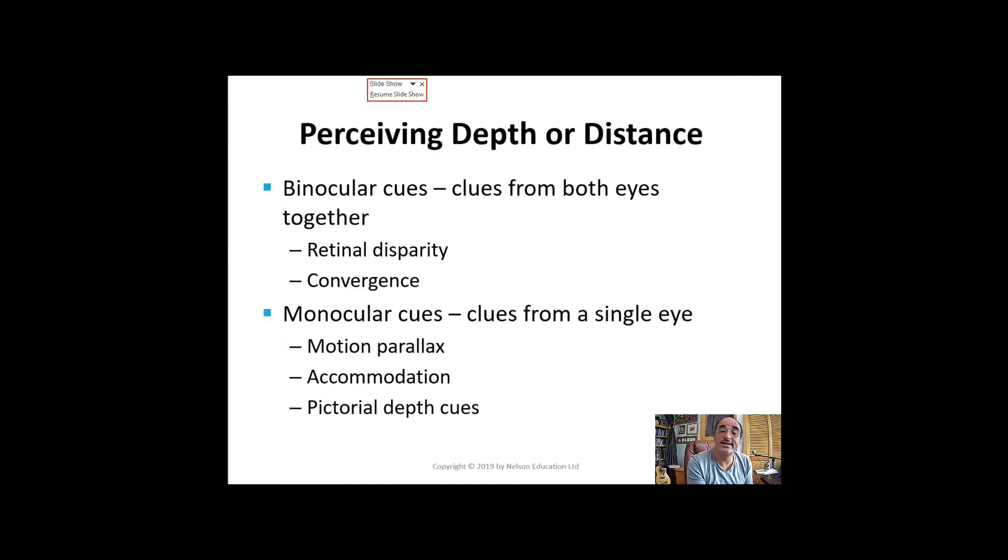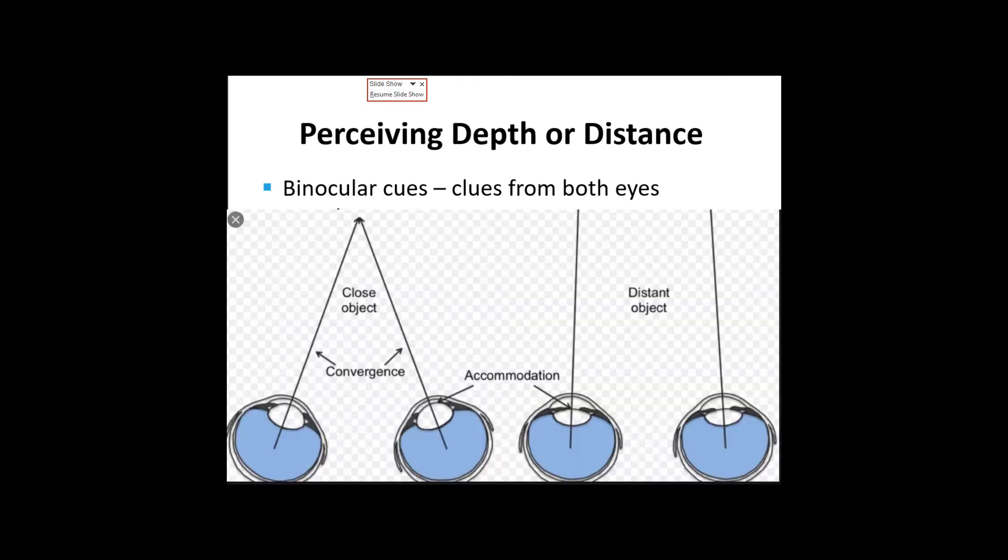Depth perception involves the interpretation of visual cues that indicate how near or far away something is, and there are two types of clues that are used to make judgments of distance.